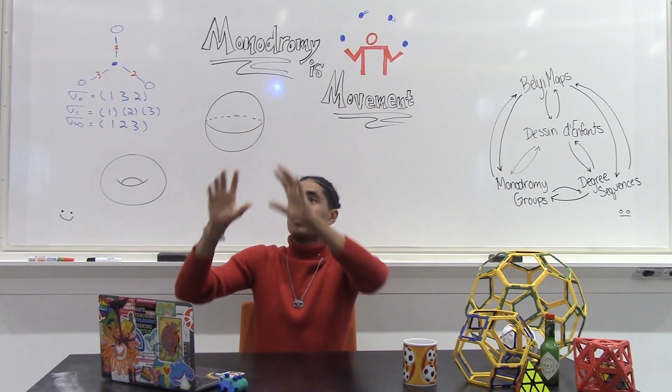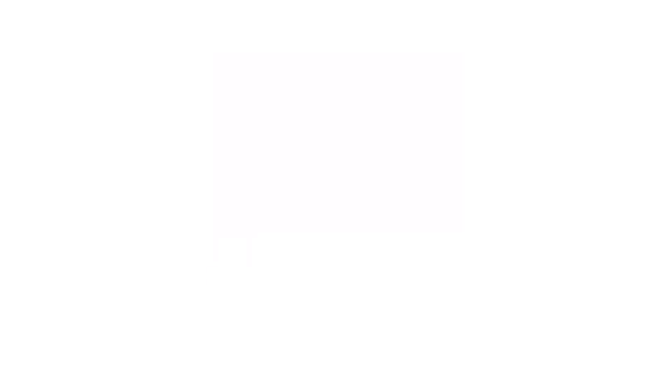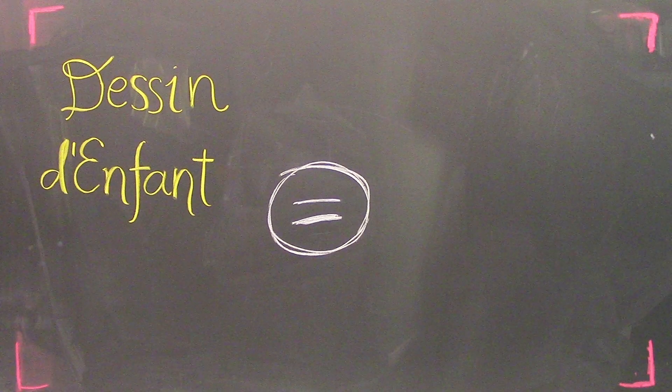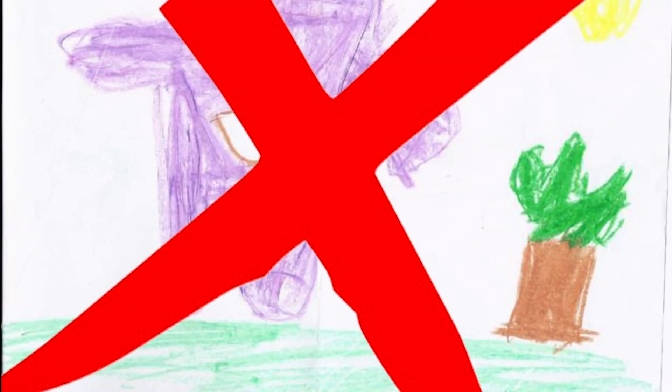Let's start with explaining the soccer ball. Let's go to the board. First of all, we need to talk about Dessin. Dessin d'enfant is French for child's drawing. Not just any child's drawing though.